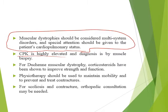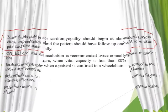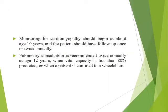Muscular dystrophies should be considered a multi-system disorder; special attention should be given to cardiopulmonary status. In Duchenne, steroid may give some improvement; physiotherapy is important, and scoliosis and contractures should be treated with orthopedic consultation. When the patient reaches age 10, cardiac assessment should be done twice annually. By age 12, lung capacity decreases, so pulmonary checking should be done twice yearly.